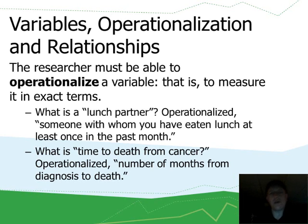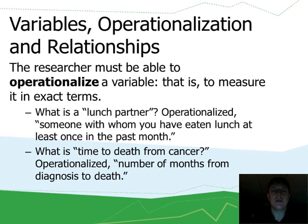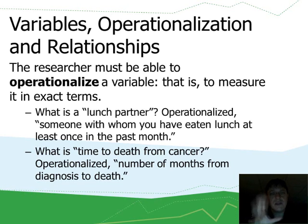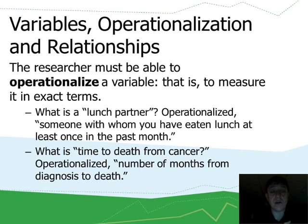If I talk about 'I have a lunch partner,' that may mean something different to two different people. But if I operationalize that variable — is someone my lunch partner, yes or no — I could say: let's measure that as someone with whom you've eaten lunch at least once in the past month. If you've eaten lunch with someone in the past month, we're going to count them as a lunch partner; otherwise, not a lunch partner. A bright line between the two states — that's what operationalization is.